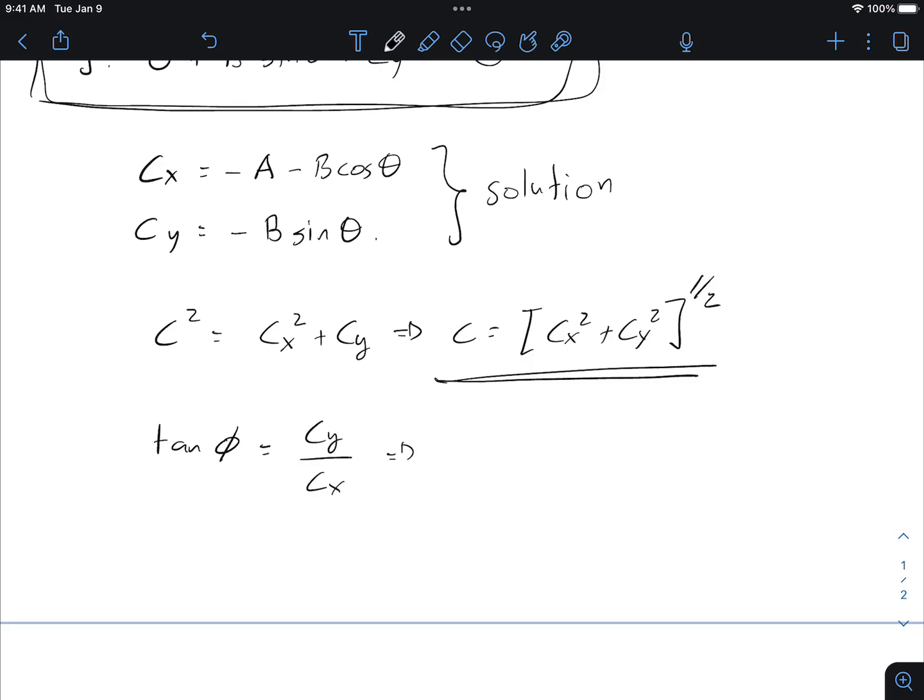So I'm also going to have that the tangent of the angle phi is opposite over adjacent. And so this tells me that phi is the inverse tangent or the arc tangent of cy divided by cx. And again, because we know what these numbers are, we can plug into the calculator and get numerical answers. This right here is a complete solution to the problem. So this is the solution that we were looking for.